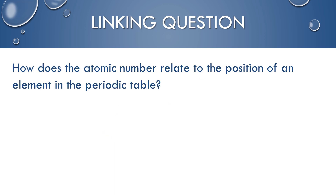Our second linking question links to Structure 3.1: how does the atomic number relate to the position of an element in the periodic table? In general, the elements increase from smallest atomic number to largest, but that repeats — when you get to the end of a row, you start the next row. When the periodic table was being developed, they noticed a repeat in chemical properties and reactivities, which is why they need to start new rows. Basically, the periodic table starts with the smallest atomic number and works its way up to the largest.